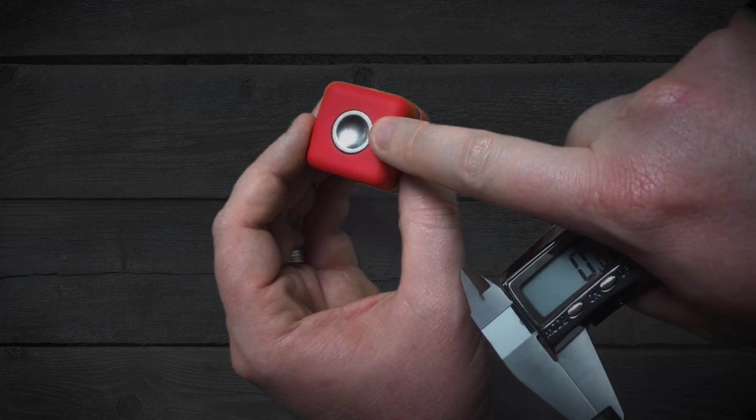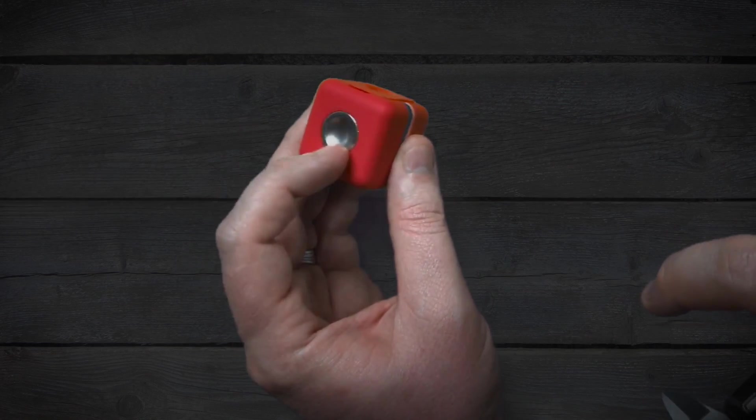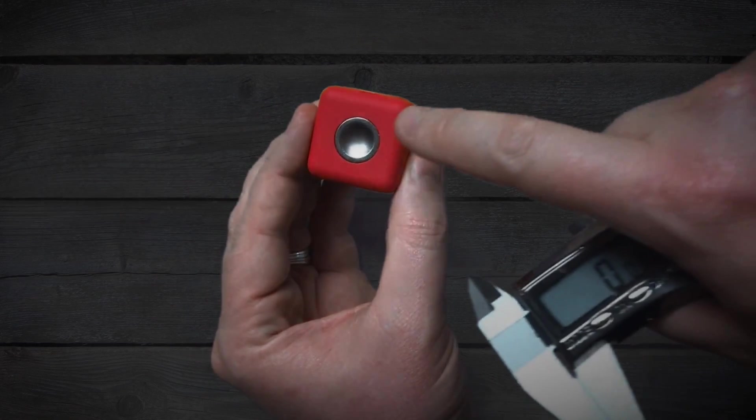So in this case, I need to make a ball mount that fits this little divot here. This is magnetic. It's on a little action camera.